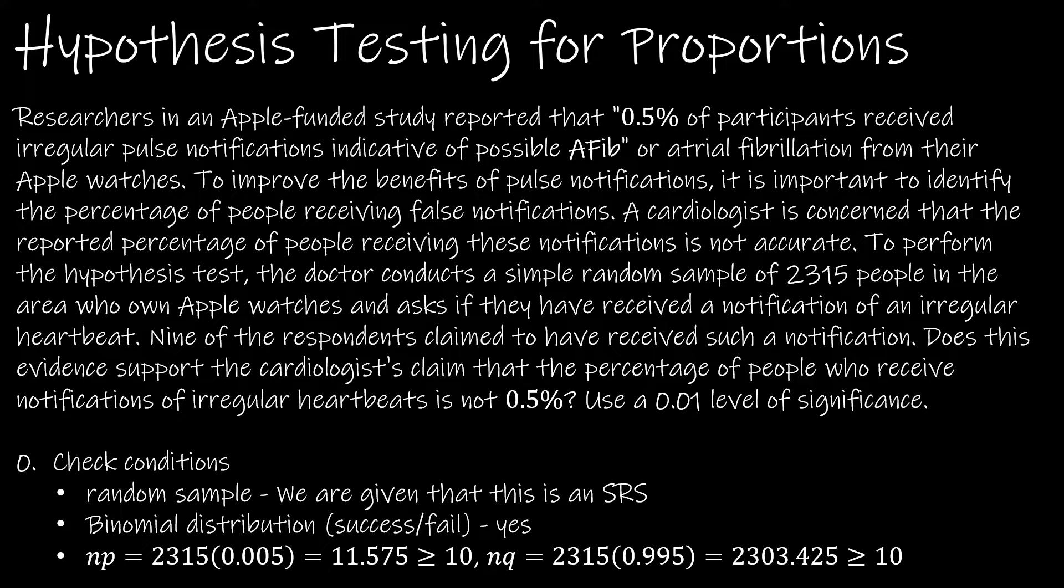Researchers in an Apple-funded study reported that 0.5% of participants received regular pulse notifications indicative of possible AFib. So that tells us that P is 0.005. Remember it's given as a percentage, we move it two places to write it as a decimal. So that will also be our null hypothesis.